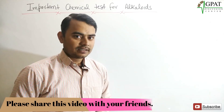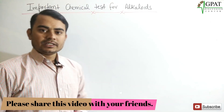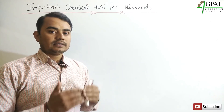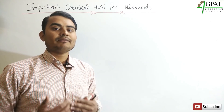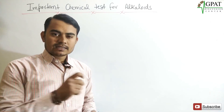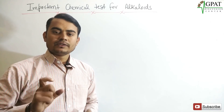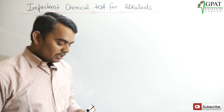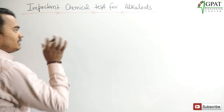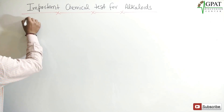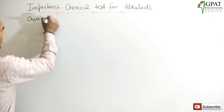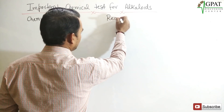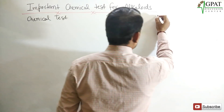Hello friends, welcome back once again. In today's video lecture, I am going to discuss important chemical tests for alkaloids. These are the chemical tests which are basically used for the identification of alkaloids, and I will also discuss some important chemical tests for individual drugs. I will divide these tests into: chemical test, reagent, and observation.